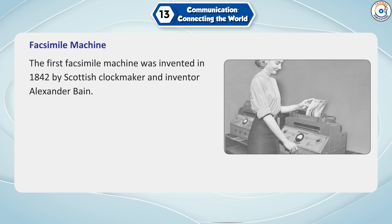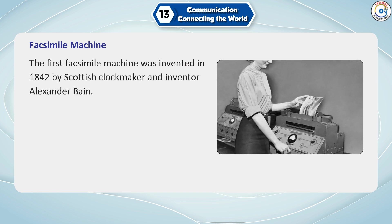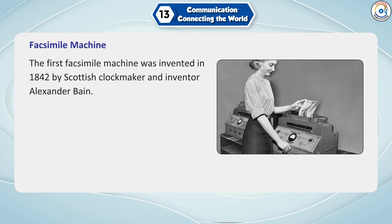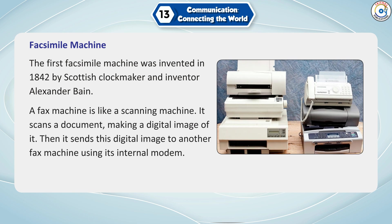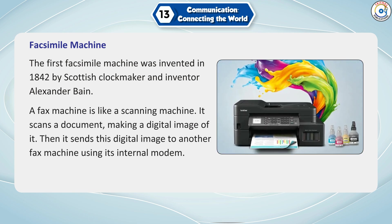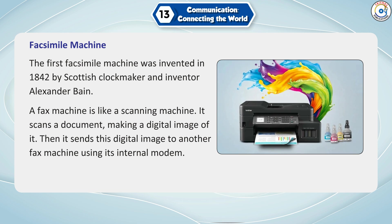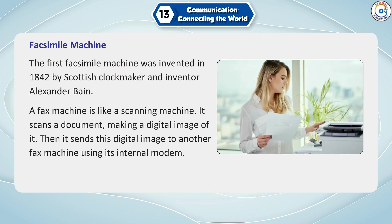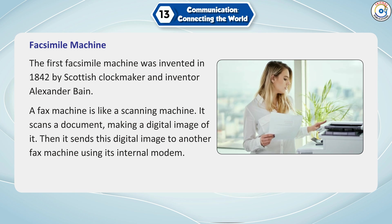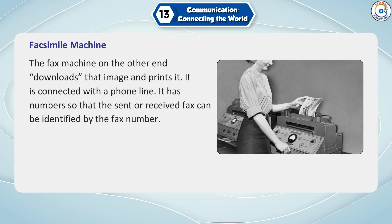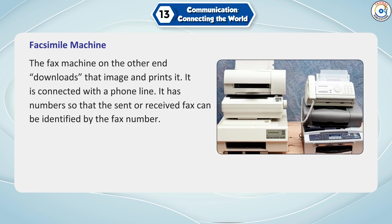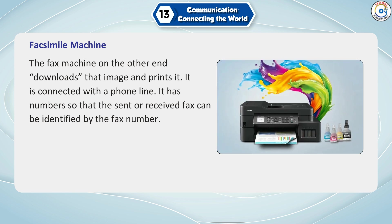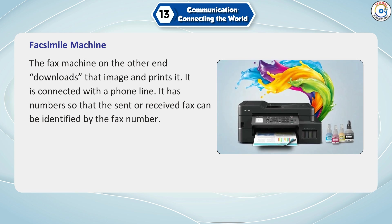The first facsimile machine was invented in 1842 by Scottish clockmaker and inventor Alexander Bain. A fax machine is like a scanning machine. It scans a document, making a digital image of it. Then it sends this digital image to another fax machine using its internal modem. The fax machine on the other end downloads that image and prints it. It is connected with a phone line and has numbers so that the sent or received fax can be identified by the fax number.